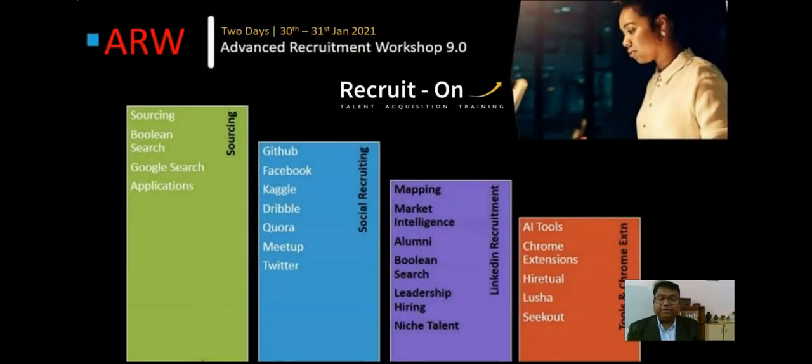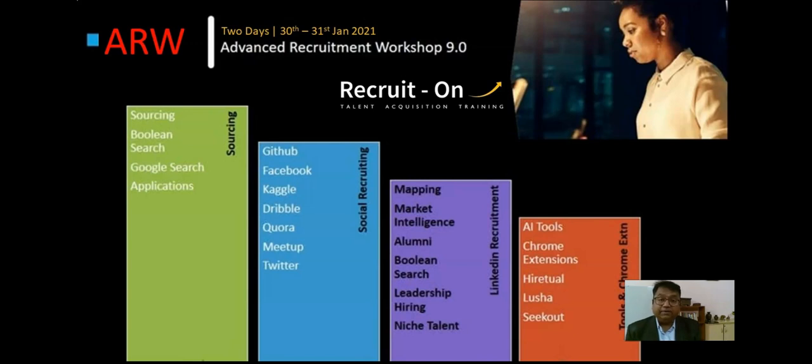Your next question is probably where you can learn all these modules. You can learn at Recruit On workshops. We have workshops scheduled in January and February. The first is the Advanced Recruitment Workshop, for recruiters with at least two or more years of experience. It is a fast-paced workshop covering social recruiting, Boolean Search, sourcing, new AI tools, and Chrome extensions. You can register using the link in the description and comment section of this video.